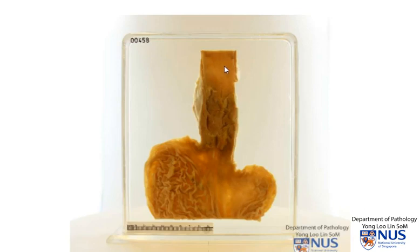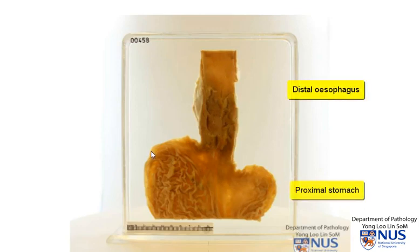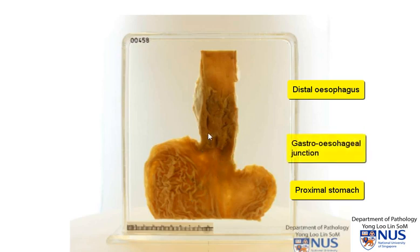This is a specimen of the distal esophagus together with the proximal stomach. Here is the fundus of the stomach and these are the folds or the rugae of the gastric mucosa. This is the gastroesophageal junction and here is the mucosa of the esophagus.